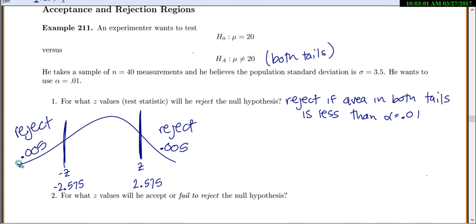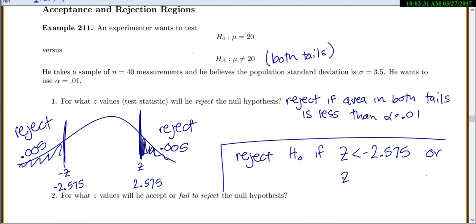So again, we always reject if we're in the tails. We want a total combined area in our tails to be 0.01. So that means 0.005 in each tail. And so if we're bigger than z equals 2.575 or less than negative 2.575, we reject it. So then we write ourselves a nice little rule here. So we will reject the null hypothesis if his test statistic, z, ends up being less than negative 2.575, so far in the tails, or z is greater than 2.575.